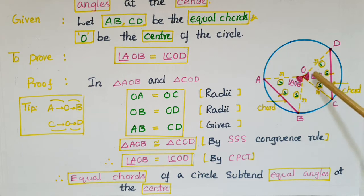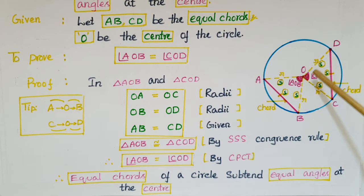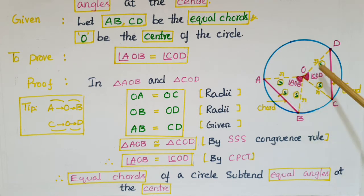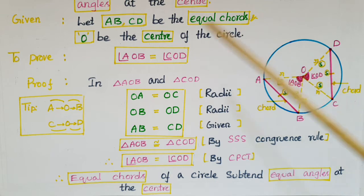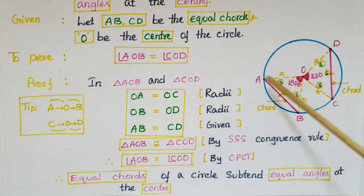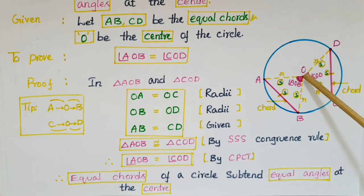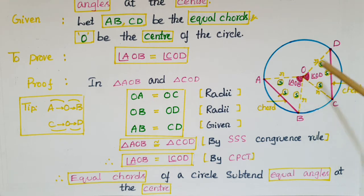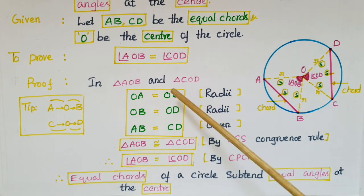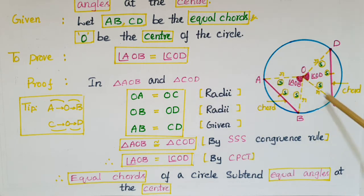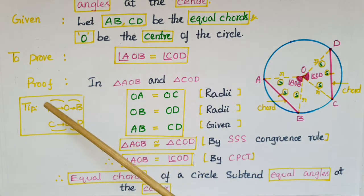To prove these two angles are equal, we note they are angles of two triangles — triangle AOB and triangle COD. So first, we congruent these two triangles by marking their equal parts. In triangle AOB and triangle COD: OA is equal to OC, because all radii of the same circle are equal. Here OA = OB = OC = OD.